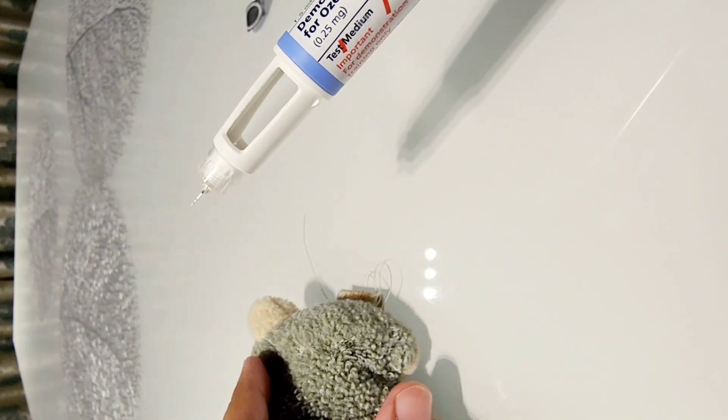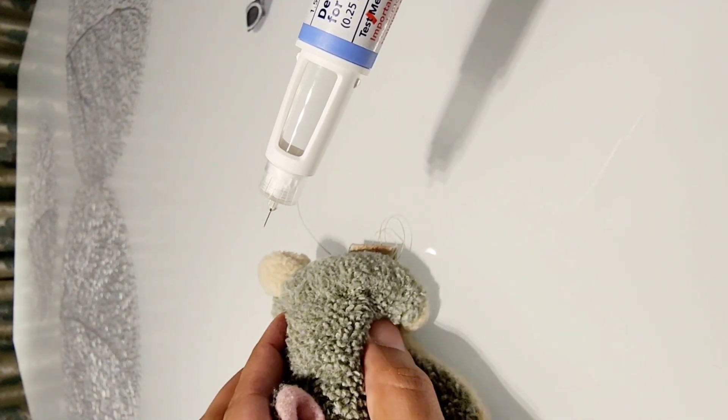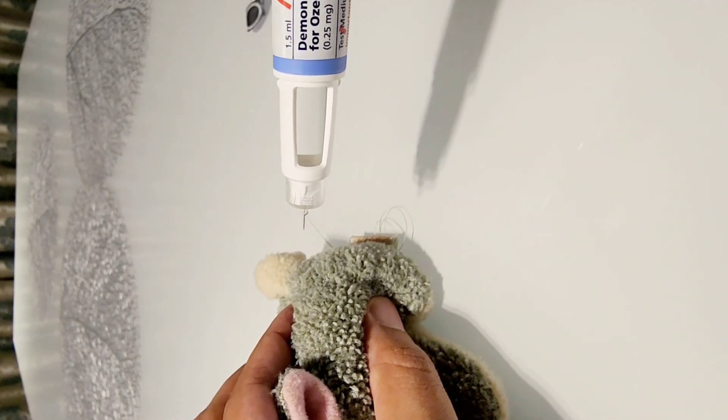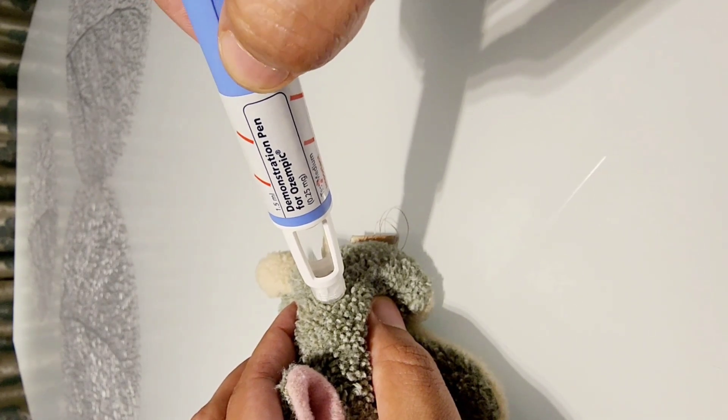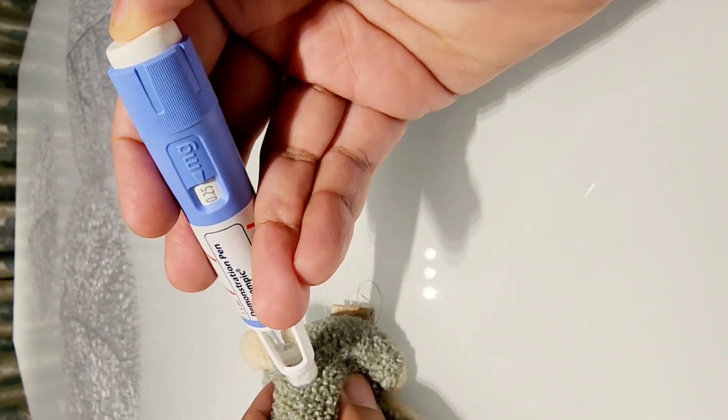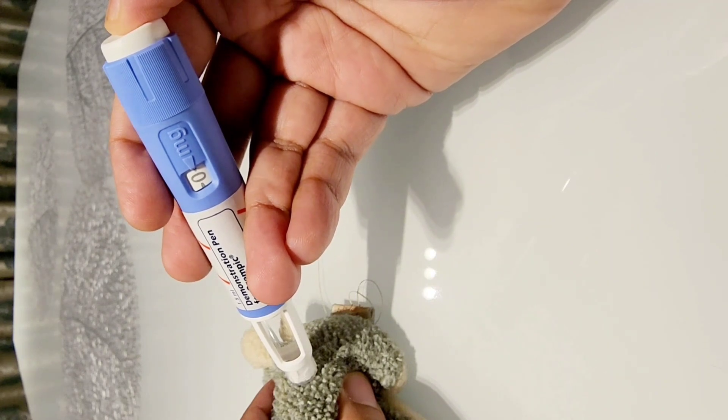Now you select the site which can be abdomen or your thigh or arm fatty bit. You will have to pinch a little bit of skin here because this doesn't have a flat surface like the pen for Manjaro. And this has to go perpendicularly into the skin.